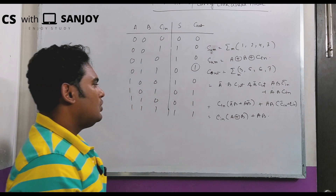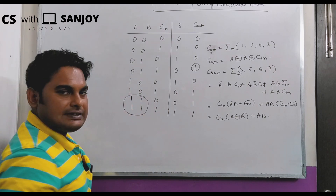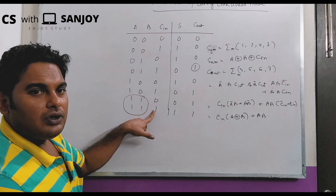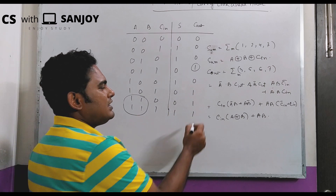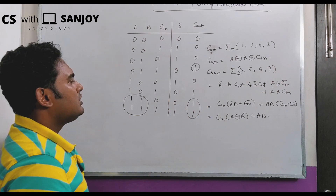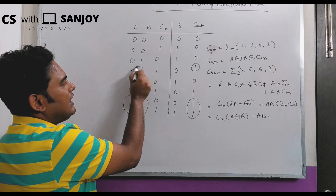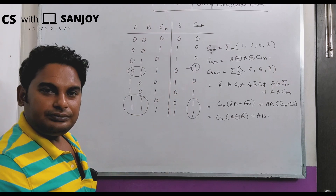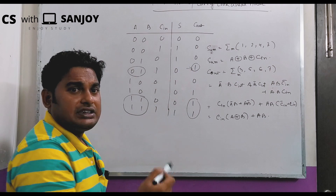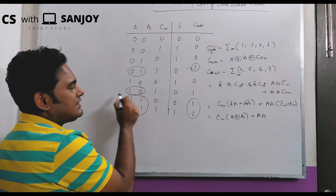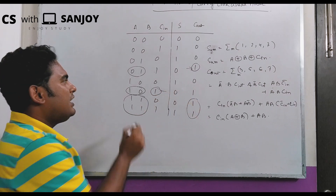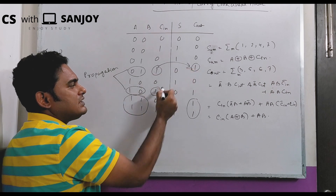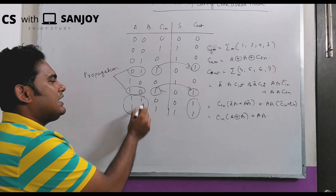When A and B are both one, regardless of C_in, a carry is generated — this is called carry generation. When A is 0 and B is 1, or A is 1 and B is 0, the carry is propagated — this is called carry propagation.